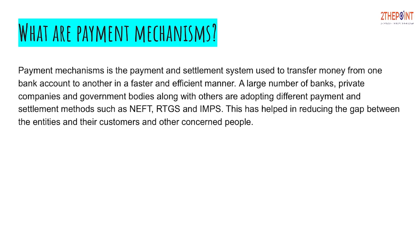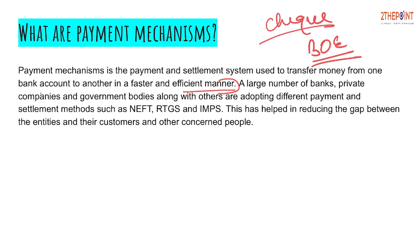Payment mechanism is a payment and settlement system used to transfer money from one bank account to another in a faster and efficient manner. Pahle zamane mein check system hota tha ya bills of exchange — traders aur business houses use karte the. Check clear hone mein do din ka samay lag jaata tha interbank transactions mein, aur bank jaake line mein khade rehna ek bahut tedious process tha.